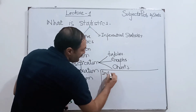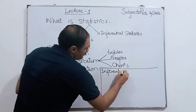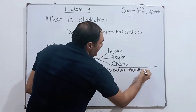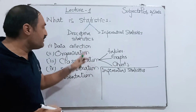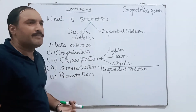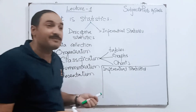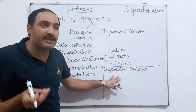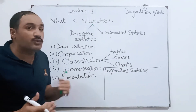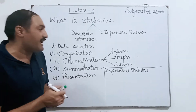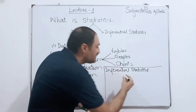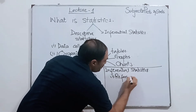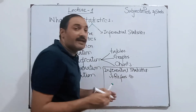Now, inferential statistics. In inferential statistics, we have made tables, graphs, and charts. What do we do in inferential statistics? It refers to arriving at a conclusion.